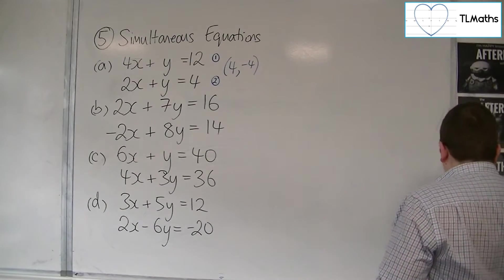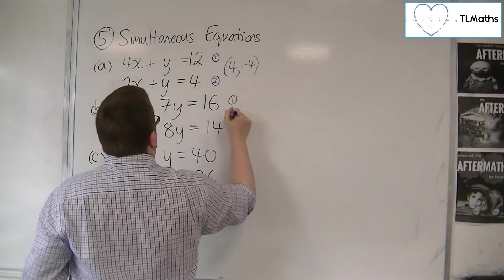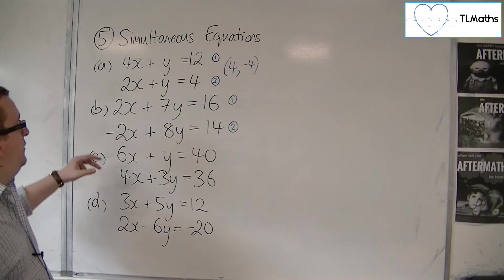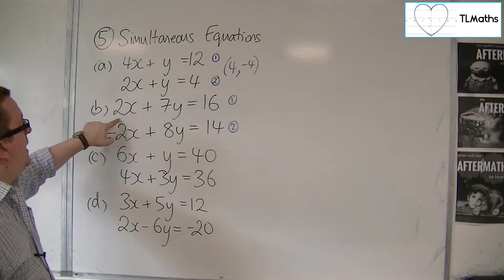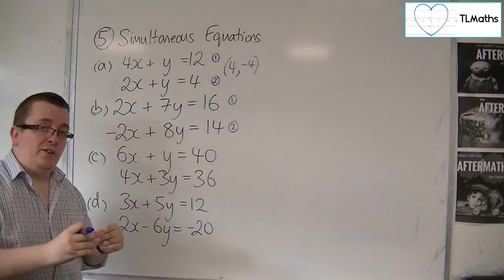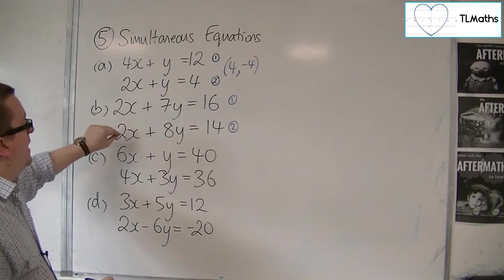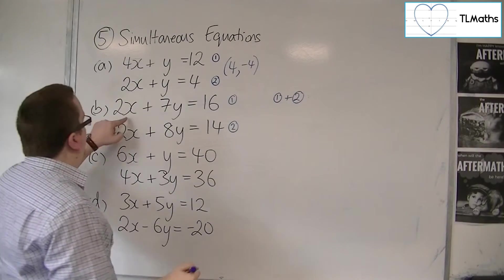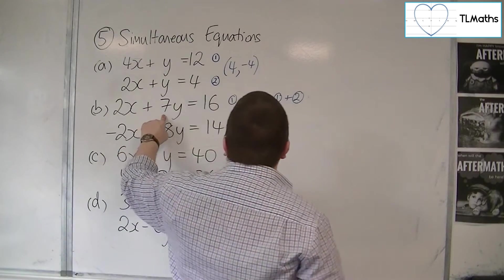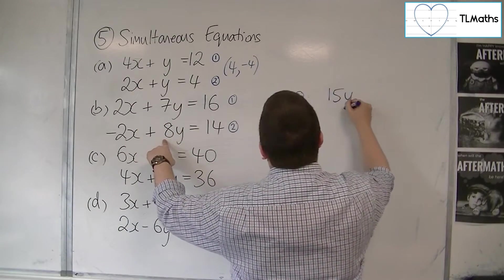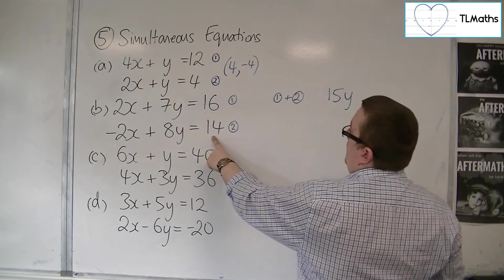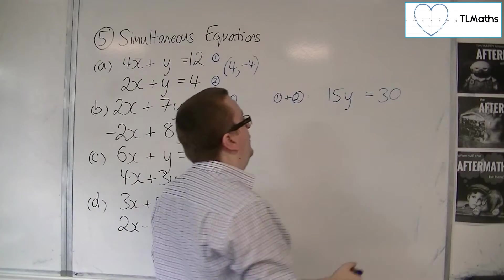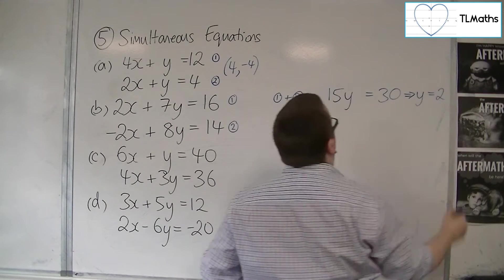Let's have a look at b. So we have equation 1 and equation 2. Remember, we're trying to eliminate either the x's or y's. Now, it makes sense that we eliminate the x's here because we've got 2x and a minus 2x. And so if I add those two equations together, the x's will cancel. So equation 1 plus equation 2. 2x plus minus 2x is 0. 7y plus 8y is 15y. 16 plus 14 is 30. So we have 15y equals 30. And so dividing both sides by 15, y must be 2.